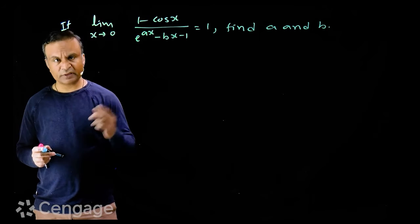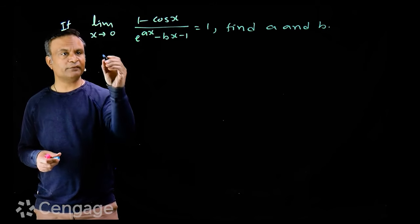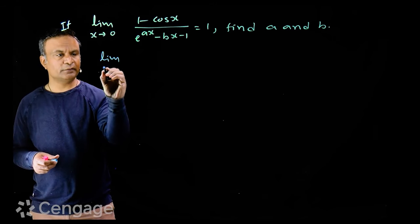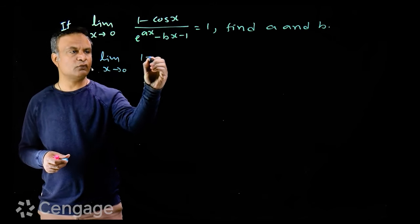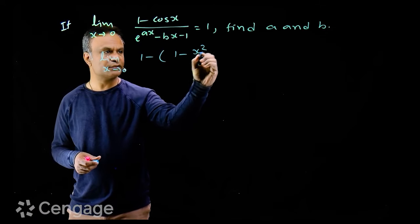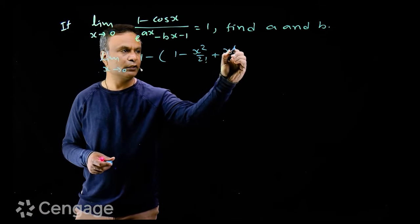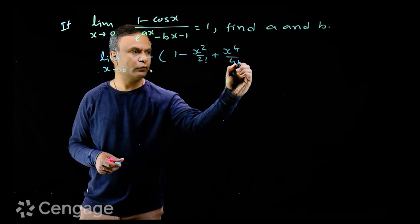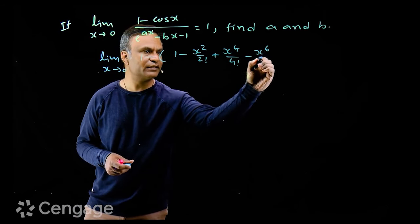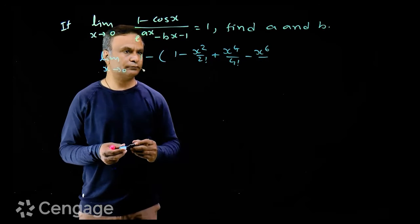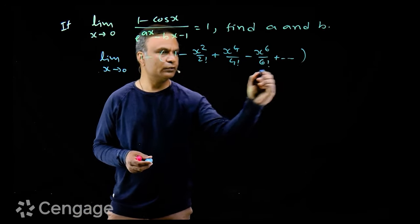Here we will use expansion formulas of cos x and e^(ax). So we have limit x tends to 0 of 1 minus the expansion of cos x, which is 1 minus x²/2! plus x⁴/4! minus x⁶/6! and so on.